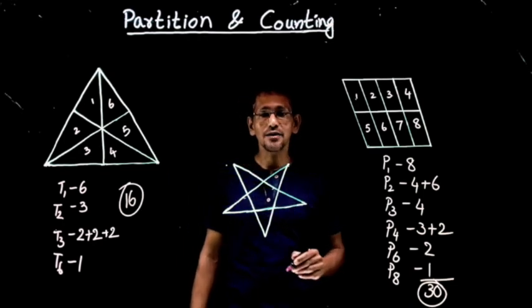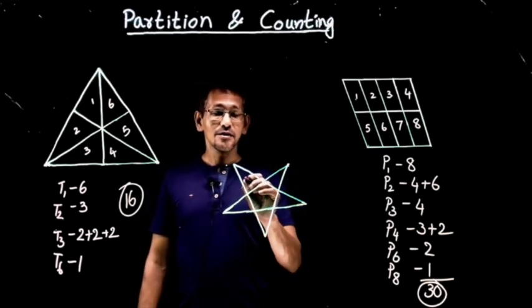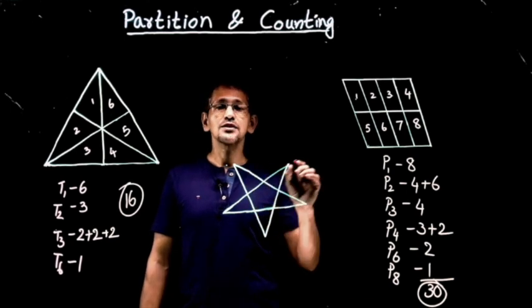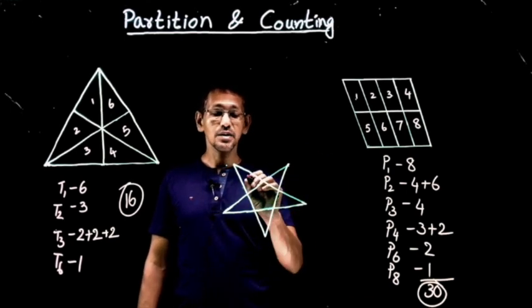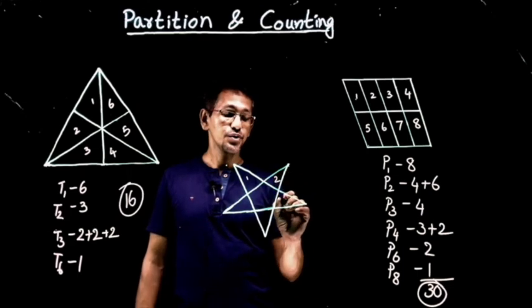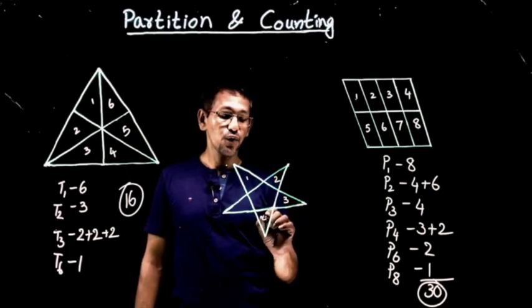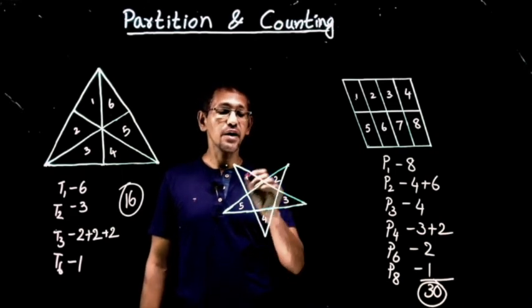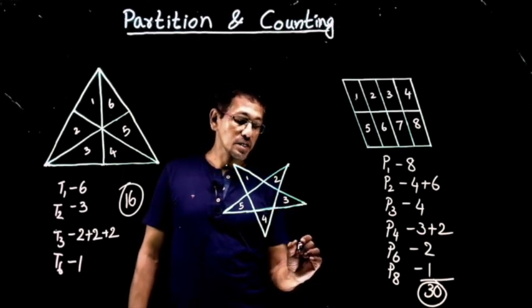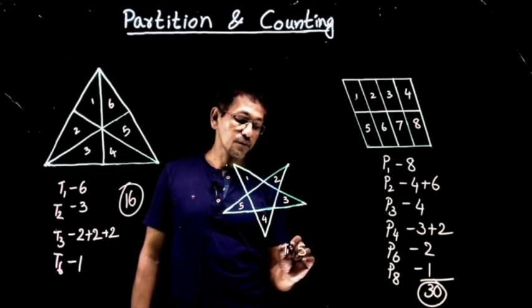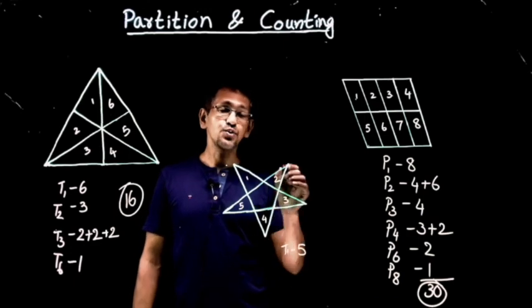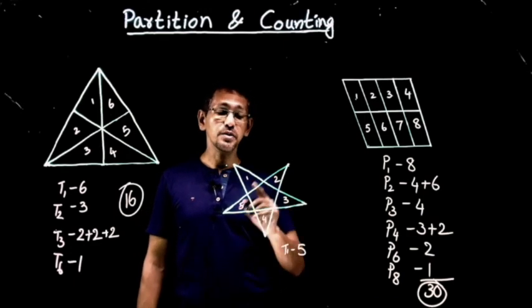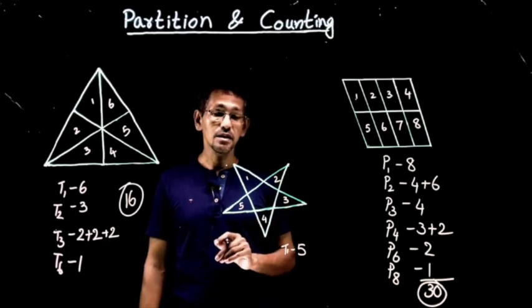How about this triangle right here? There's a star — how many triangles are in this star? Look at it: one, two, three, four, and five. Apart from these five triangles at a glance, I'll mark it as five. So triangle one at a time, we have five. How about two at a time? Do we have any triangle? Or three pieces together — do we have any other triangles?